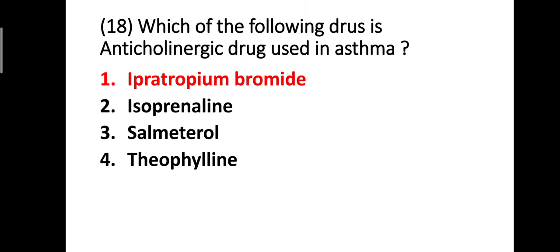Question eighteen: which of the following drugs is an anticholinergic drug used in asthma? Option one: ipratropium bromide, option two: isoprenaline, option three: salmeterol, option four: theophylline. The correct answer is option one — ipratropium bromide is the anticholinergic drug used in asthma.